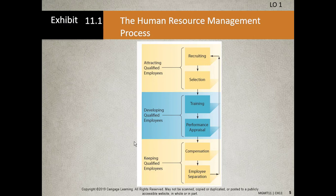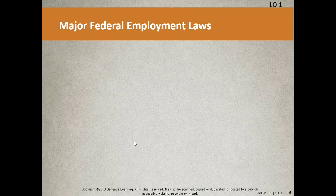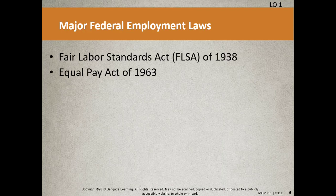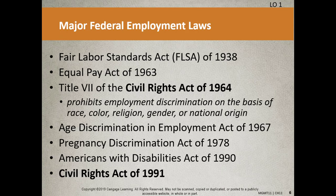There are a lot of federal laws, and I'm not going to ask you to memorize all of them. Page 227 is where we start. The big ones are the Civil Rights Act of 1964 and the Civil Rights Act of 1991. The 1991 act reinforces 1964, and this is the act that prohibits employment discrimination on the basis of race, color, religion, gender, or national origin.